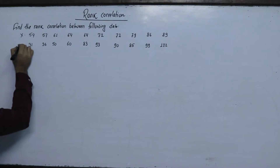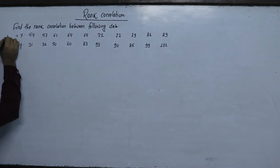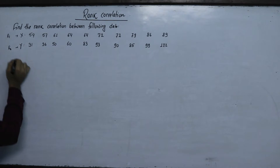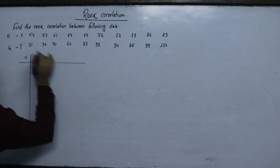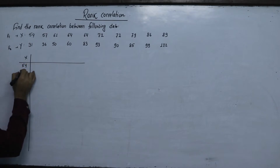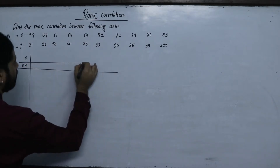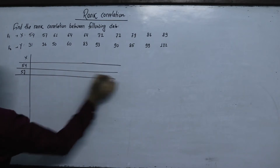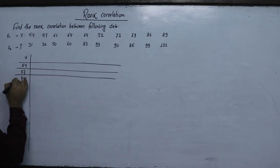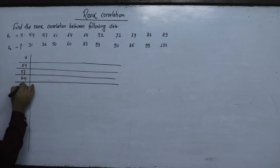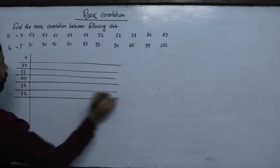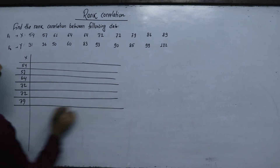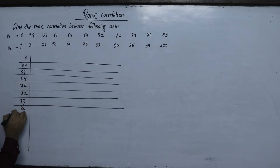We set up columns for X and Y, with R1 as the rank for X and R2 as the rank for Y. The X values are: 54, 57, 64, 72, 79, 86, 89.